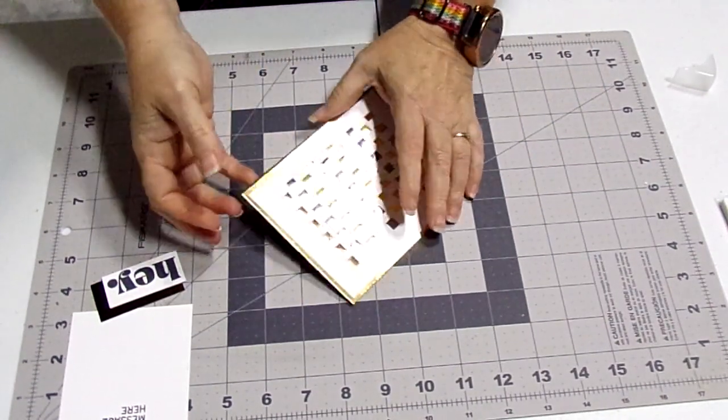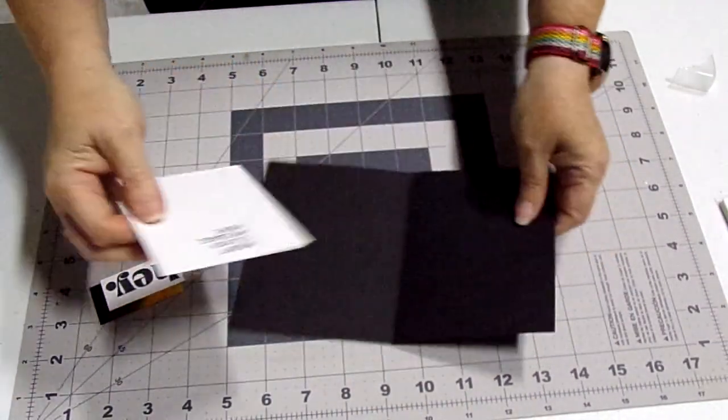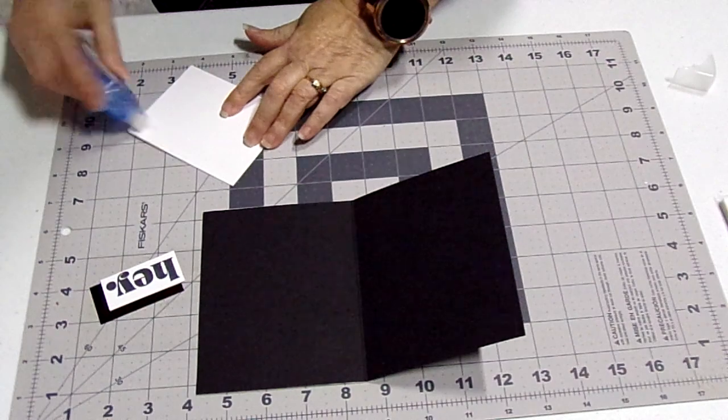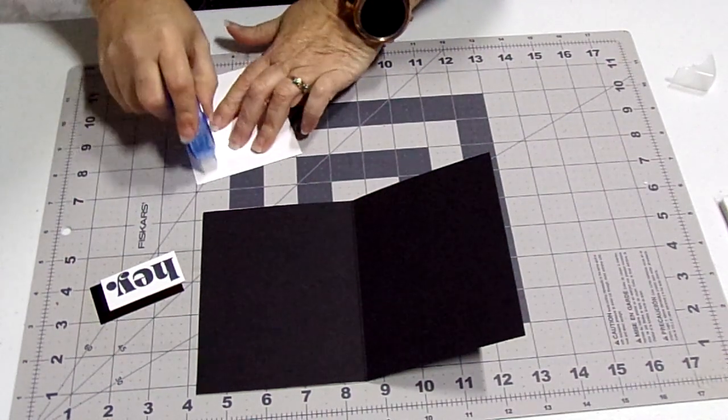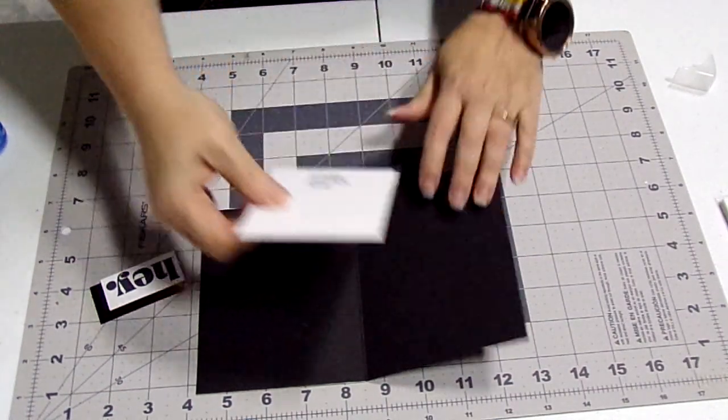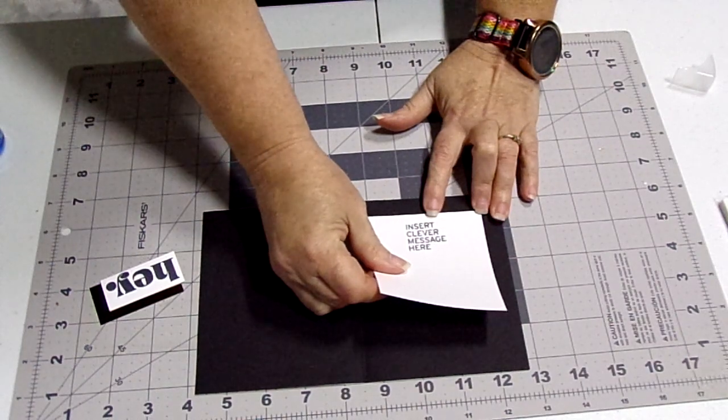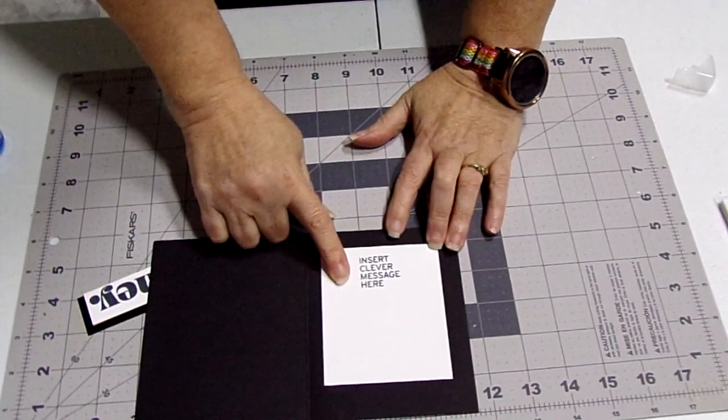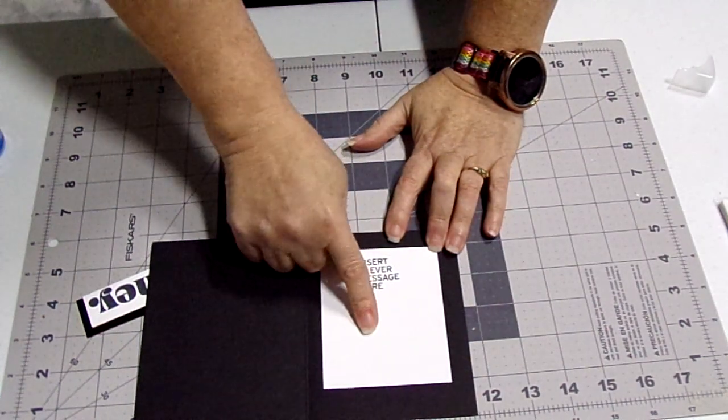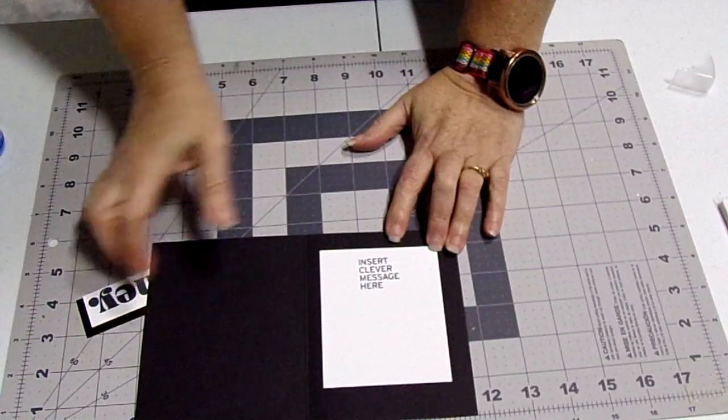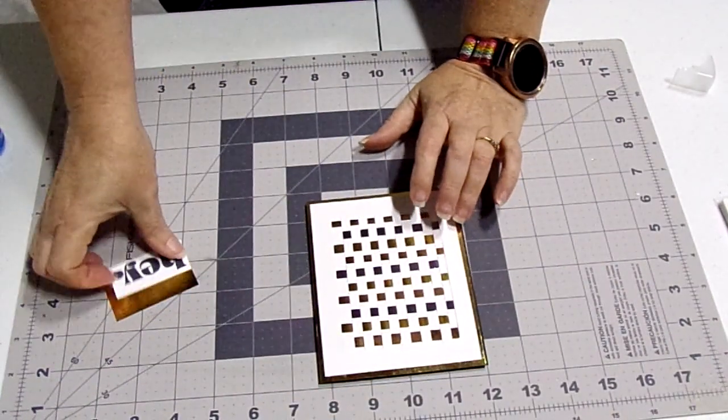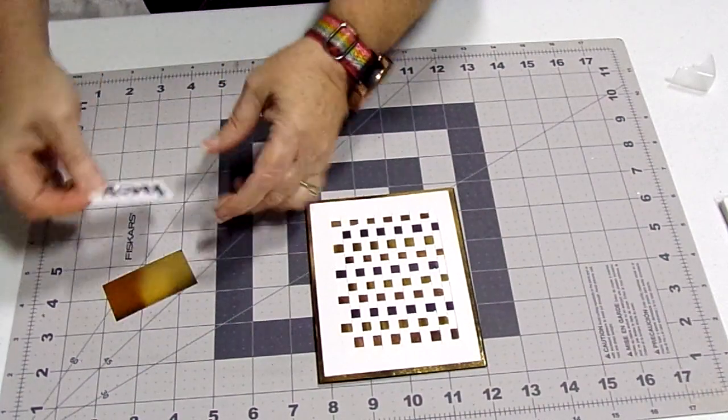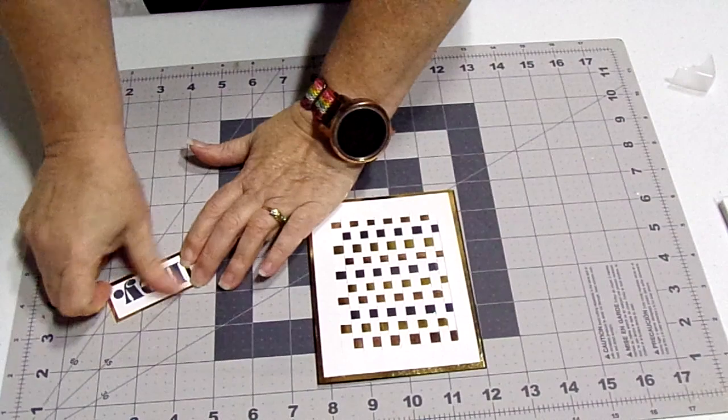So now that's adhered on the inside I'm going to put 'insert clever message here.' I'm going a little fast because I don't want the camera to die. I did the stamp off center from the inside so I had plenty of room to write down here. So we got that. I've got my little 'hey,' I'm going to put that on the gold card too.